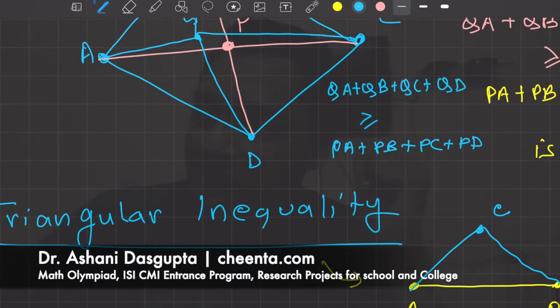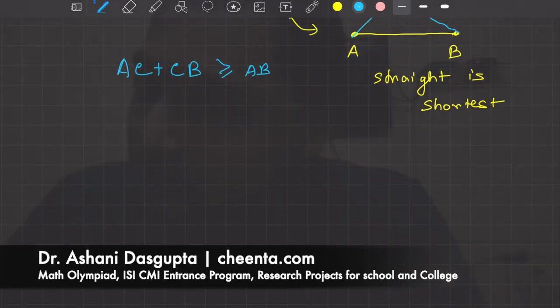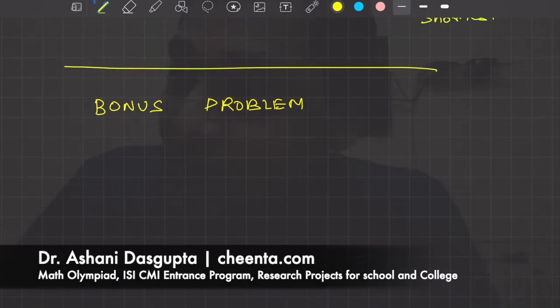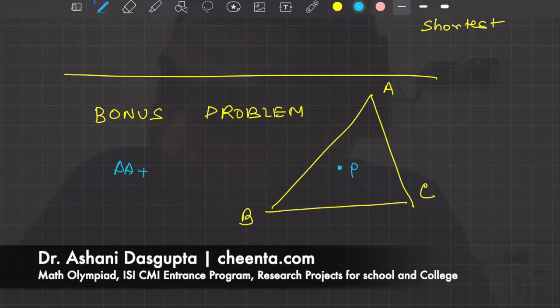Alright, now that we have it, I'll give you a bonus problem. If you try to do the same problem in the case of a triangle—let's say triangle ABC—if you try to find a point P such that PA + PB + PC is minimal, how can you do it?